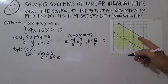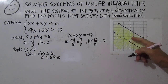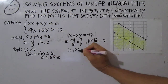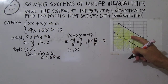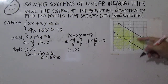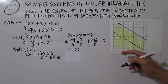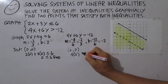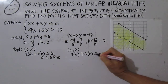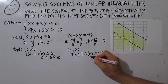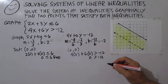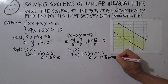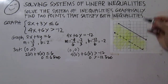Next, choose a point in one of the half planes — let's choose (0, 0). If this satisfies the inequality, shade this region; if not, shade the other side. So: 4 times 0 plus 6 times 0 is greater than negative 12. Zero is greater than negative 12 — true.